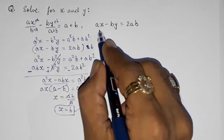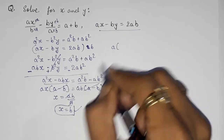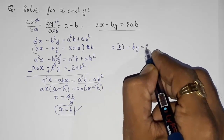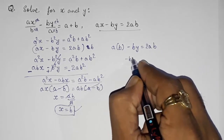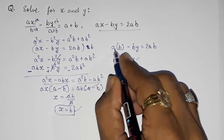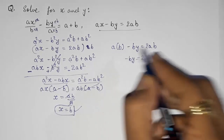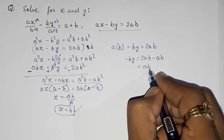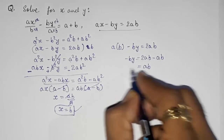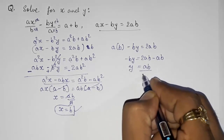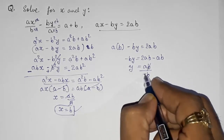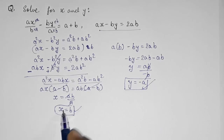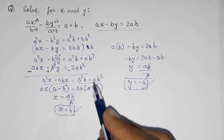Now substituting x equals b into the second equation: a times b minus b·y equals 2ab. So ab minus by equals 2ab. Taking ab to the other side gives minus by equals 2ab minus ab, which is ab. Dividing by minus b gives y equals minus a. So x equals b and y equals minus a.